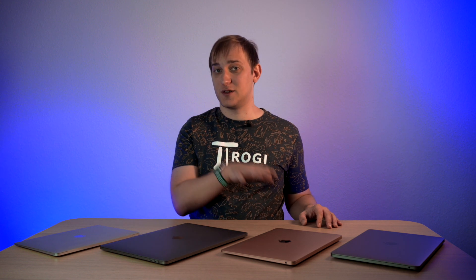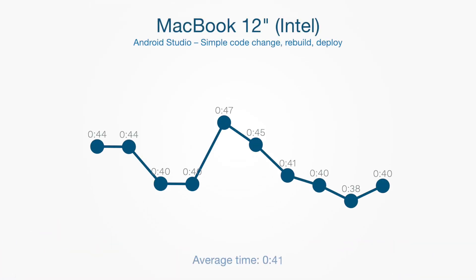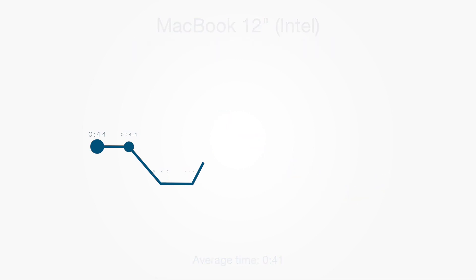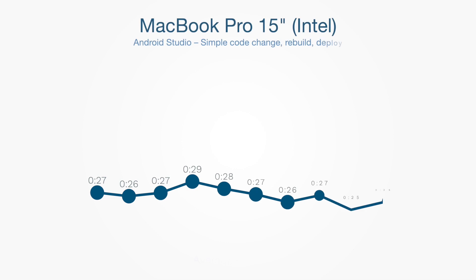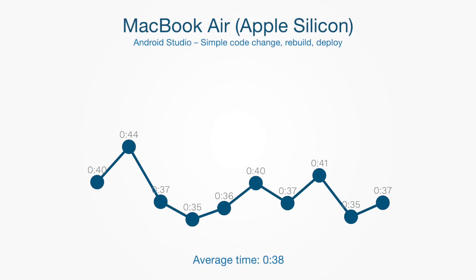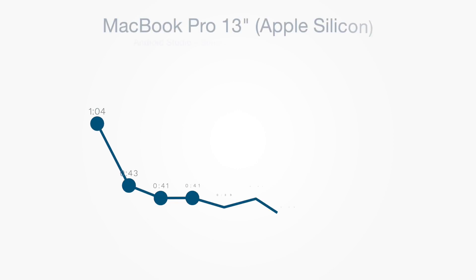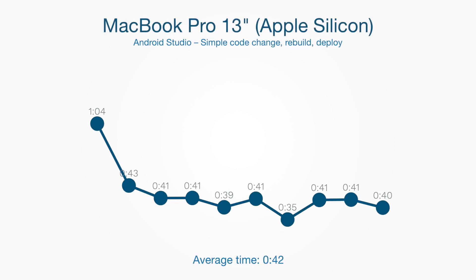Then I made a small code change — changing two values and declaring another variable, simulating debugging — and deployed to a device. I repeated this 10 times. MacBook 12 did it in about 40 seconds with no throttling since the change was small. MacBook Pro 15 did it in around 25 seconds with no fans. MacBook Air did it in around 37 seconds, and surprisingly MacBook Pro 13 took 3 seconds longer than the Air.